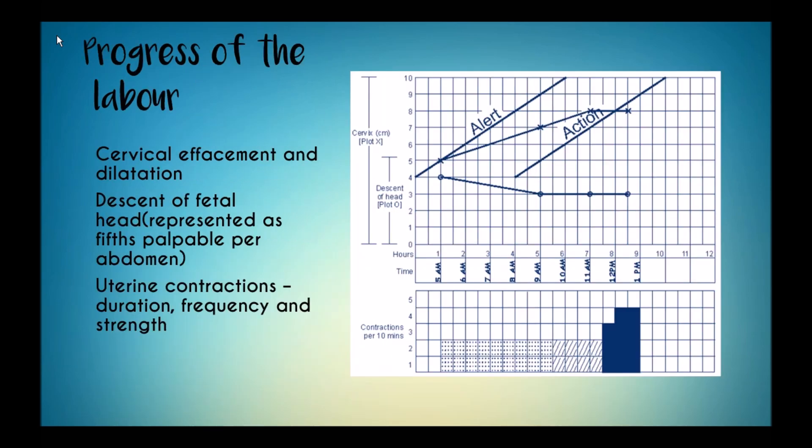The next component, which is the progress of labor, is measured as cervical effacement and dilation, descent of fetal head, and duration, frequency, and strength of the uterine contractions.